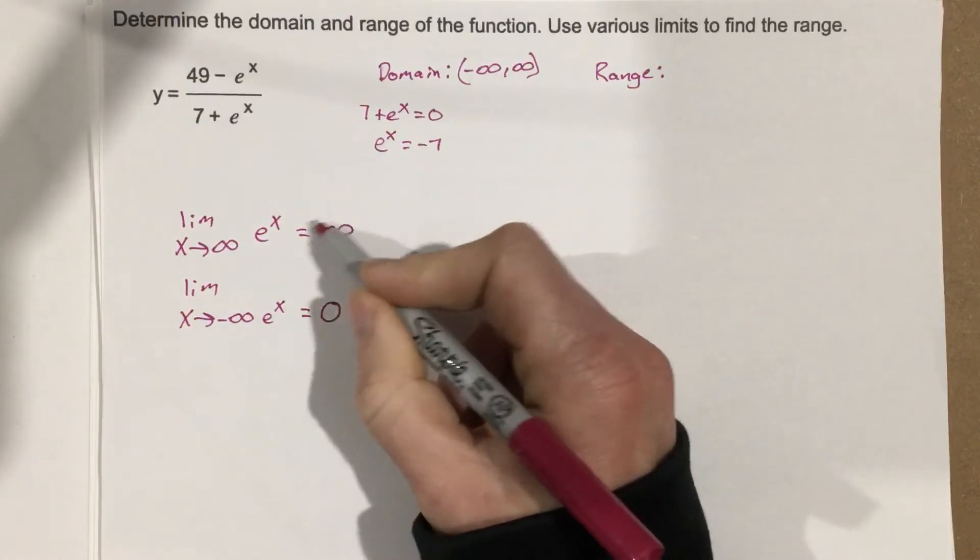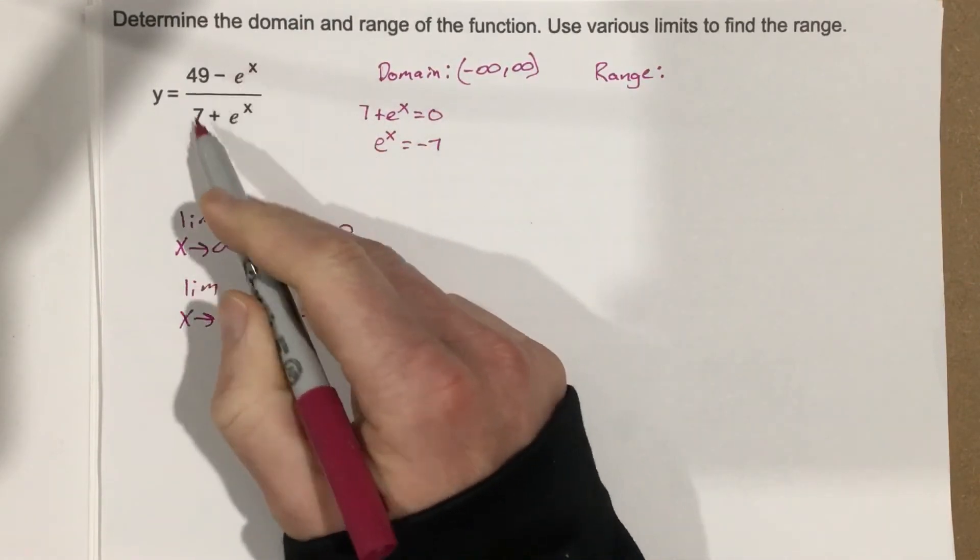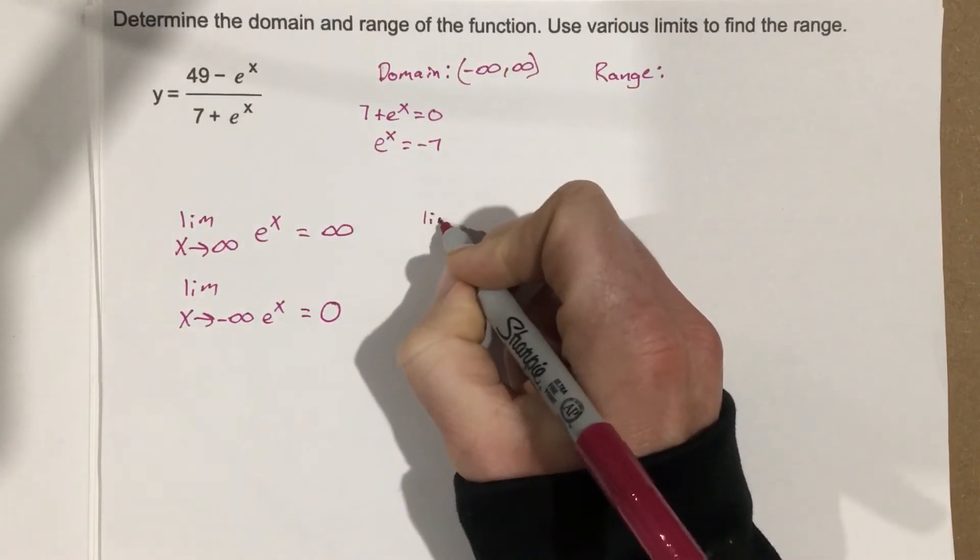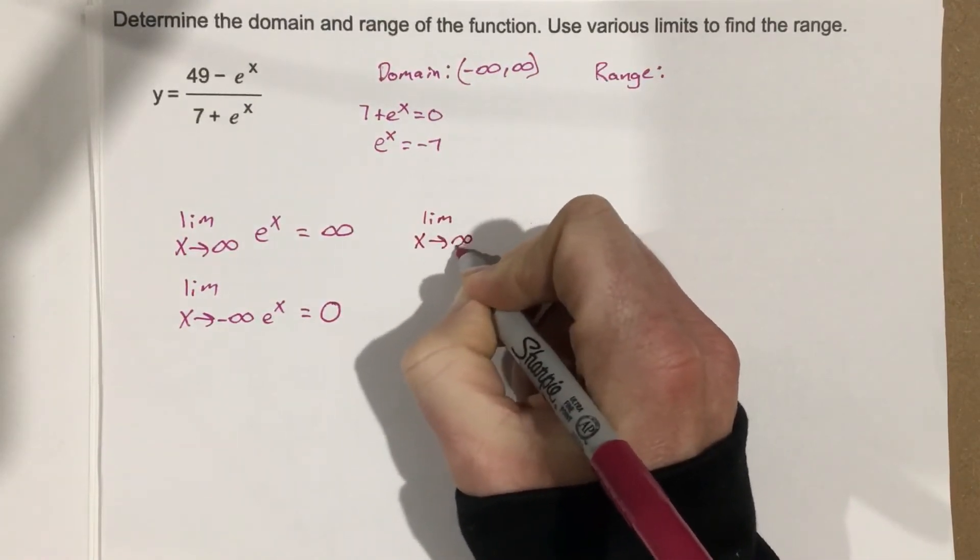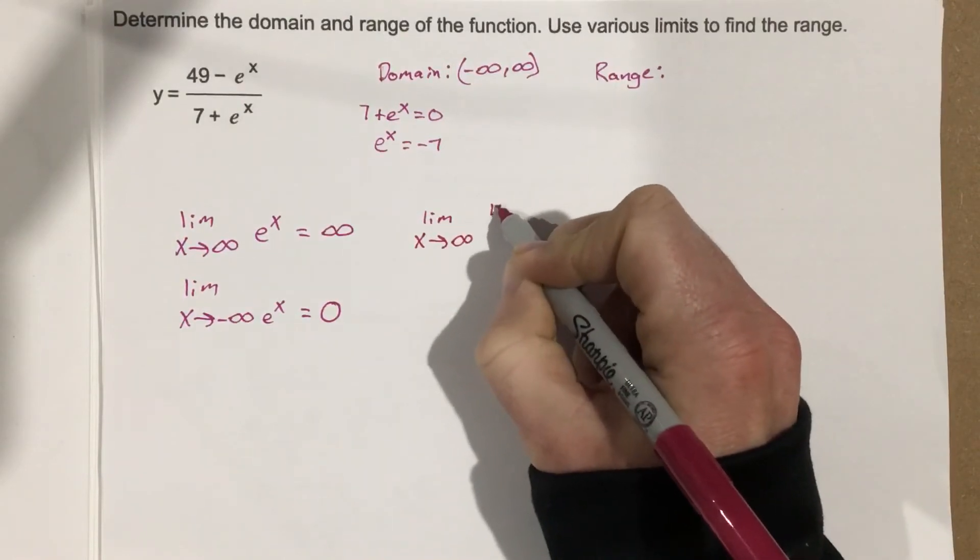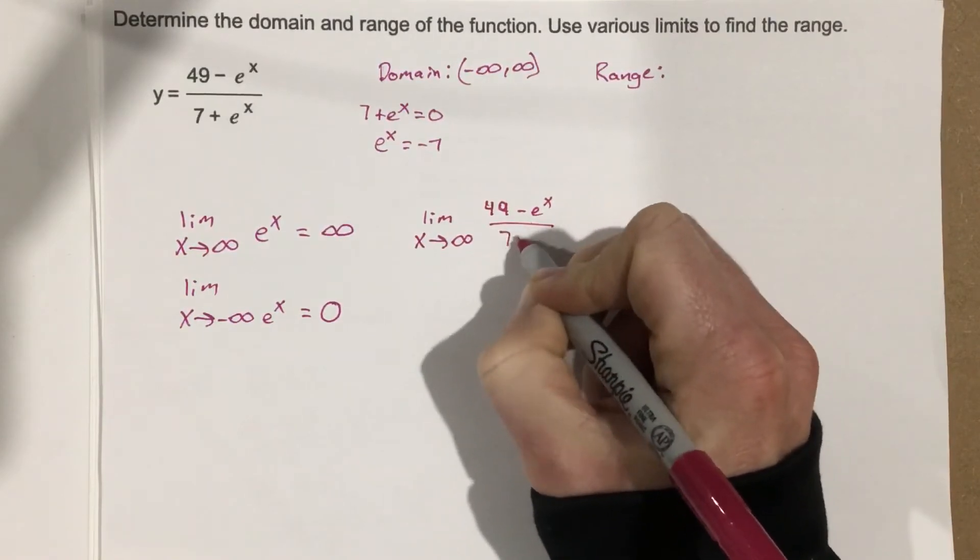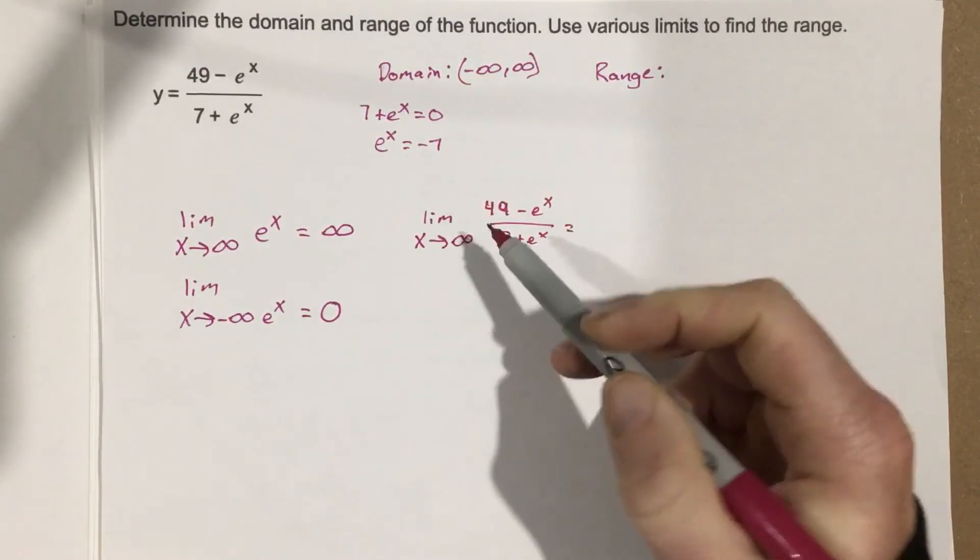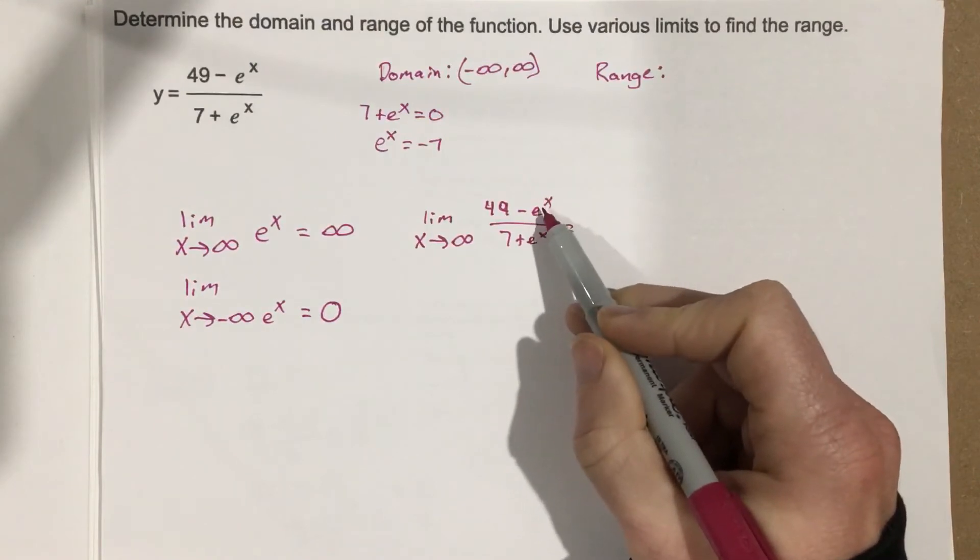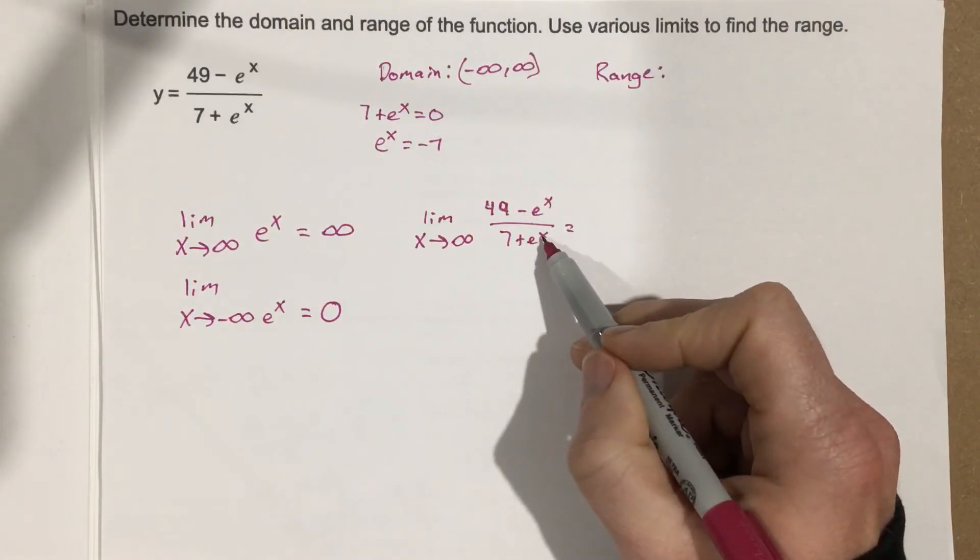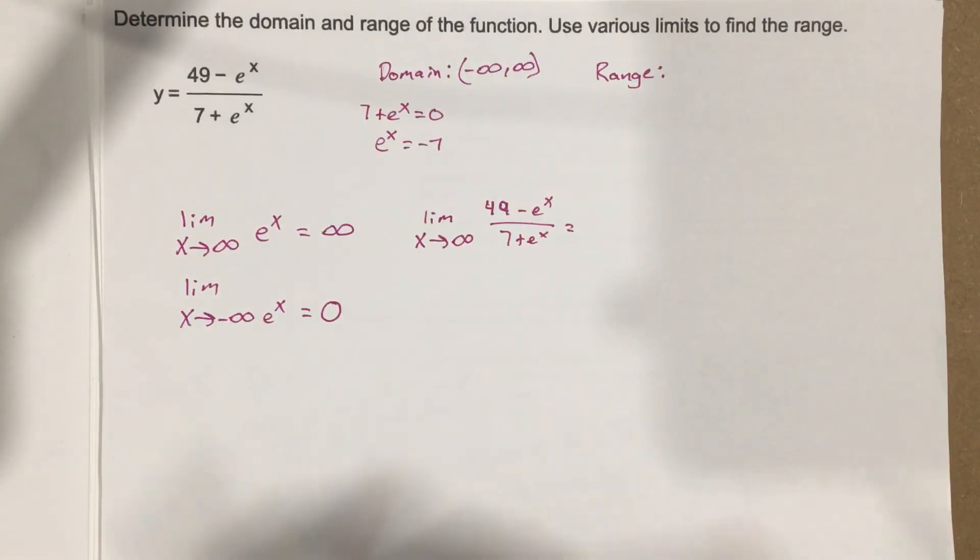So let's use these then, this idea here, to find the limits of these as they approach infinity and negative infinity. So we're going to say the limit as x approaches infinity for 49 minus e to the x over 7 plus e to the x. Well, when we plug in infinity for this part here and this part here, we're going to get essentially negative infinity on top. And on the bottom, we're going to get infinity.